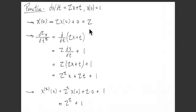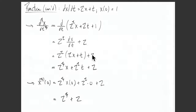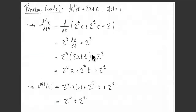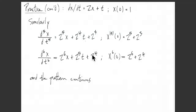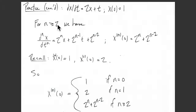Notice that the first and zeroth derivatives don't quite follow that same pattern — it's not uncommon for a pattern to only kick in after one or two derivatives. Working through the fifth and sixth derivatives confirms the pattern continues. We can then conjecture that for n ≥ 2, the nth derivative is 2ⁿx + 2^(n-1)t + 2^(n-2), and evaluating at t = 0 with x(0) = 1 gives the nth derivative at 0 as 2ⁿ + 2^(n-2).